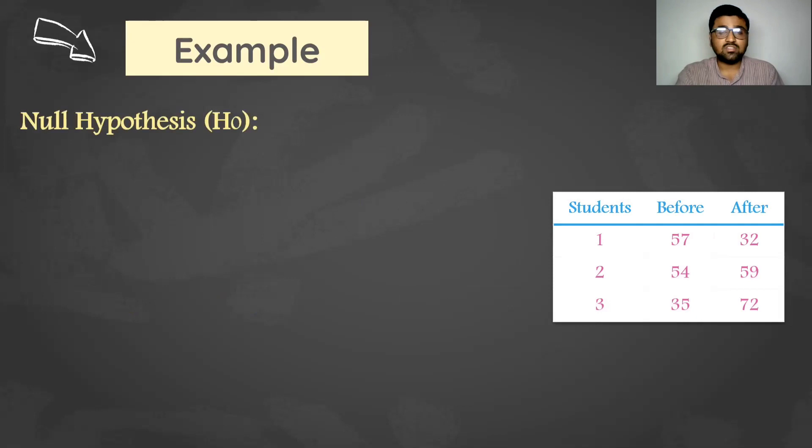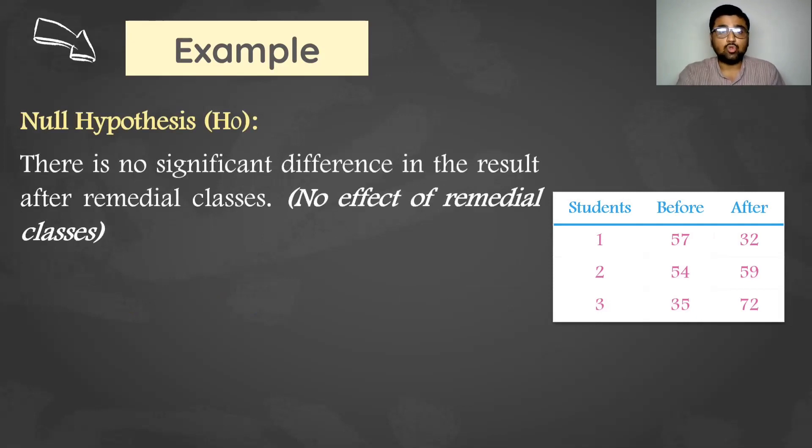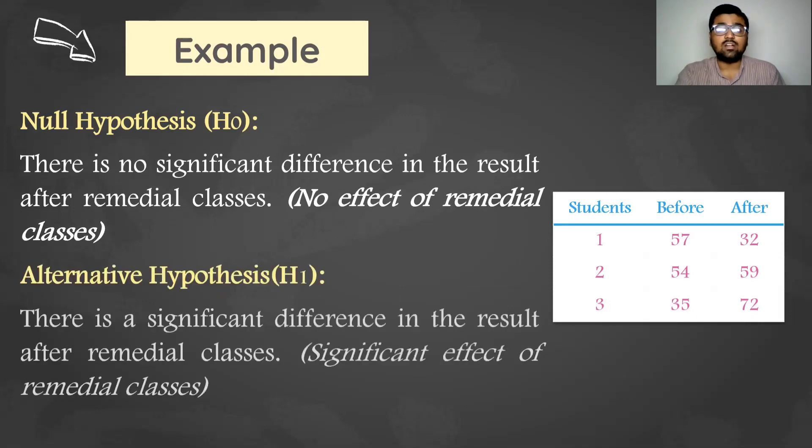Now what is the null hypothesis in this case? The null hypothesis says that there is no significant difference in the result after remedial classes, which means no effect of remedial classes, against the alternative hypothesis of a significant effect of remedial classes on the result of students.